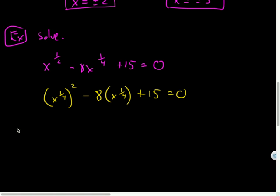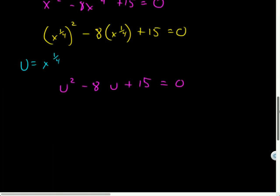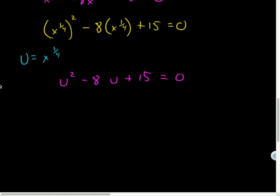So let's see. So now we'll define our own variable. So we'll say U is equal to x to the one-fourth. And now I can just plug in U in this expression here. So let's do that. So we'll have U squared minus 8U plus 15 equals 0.